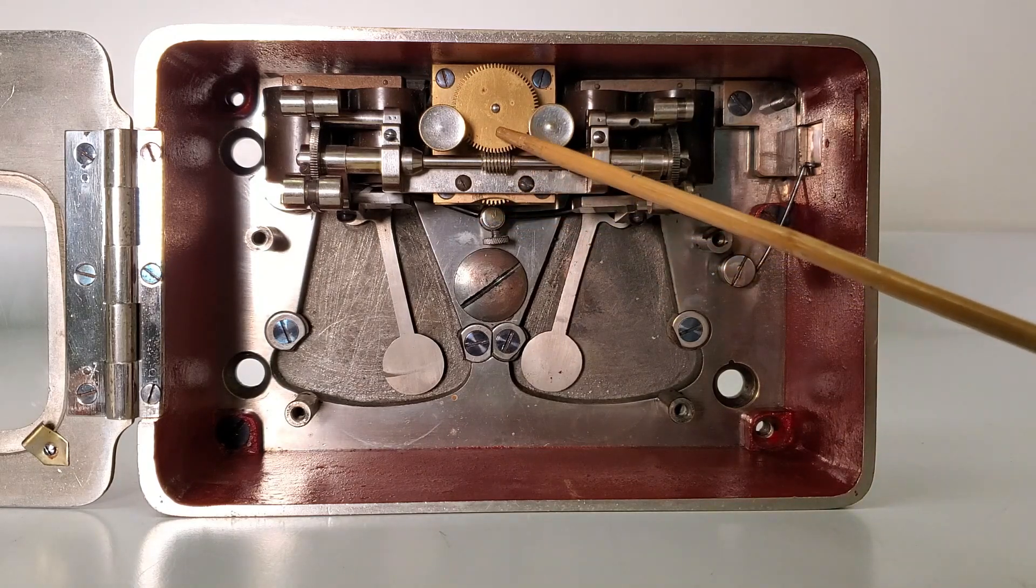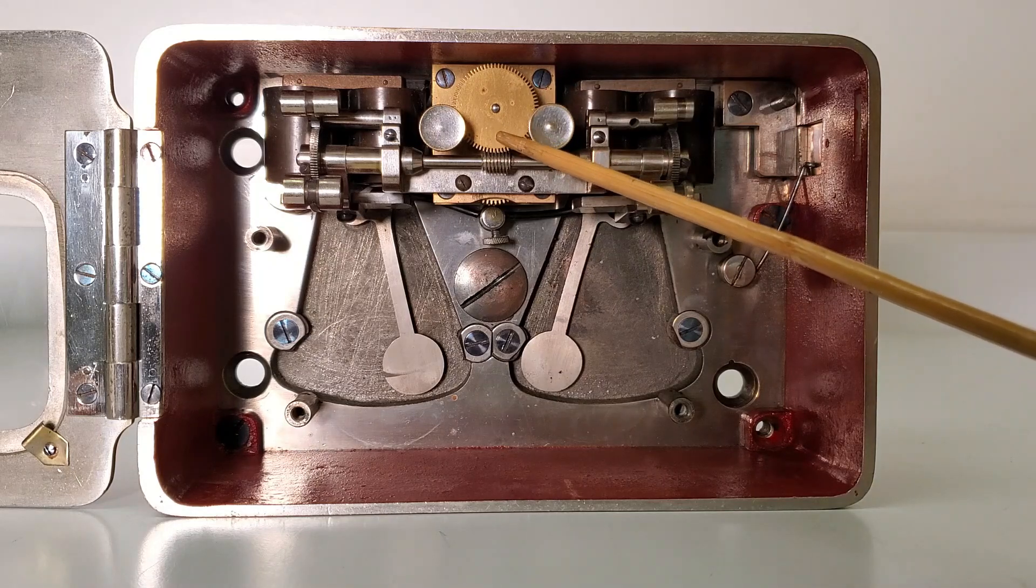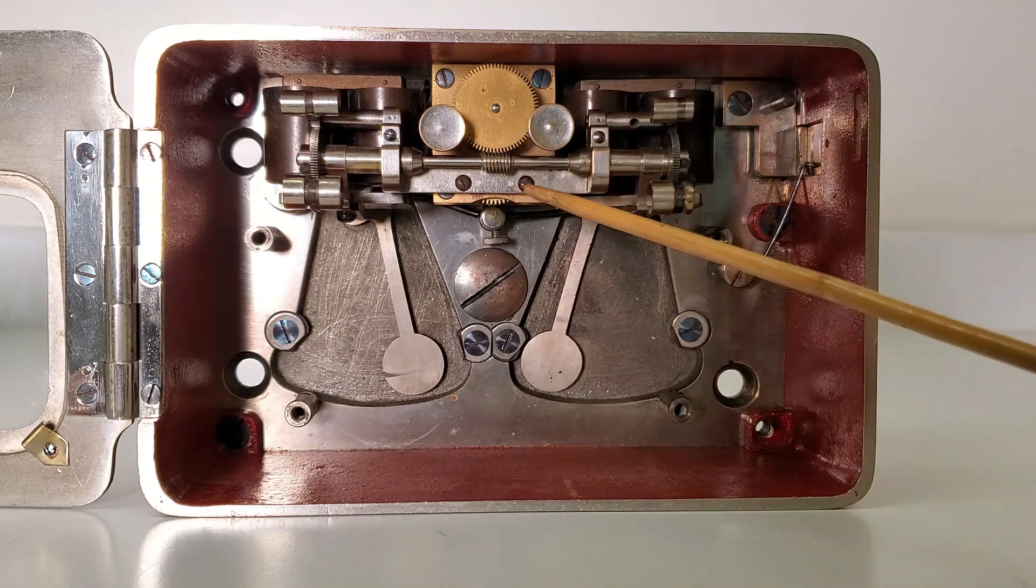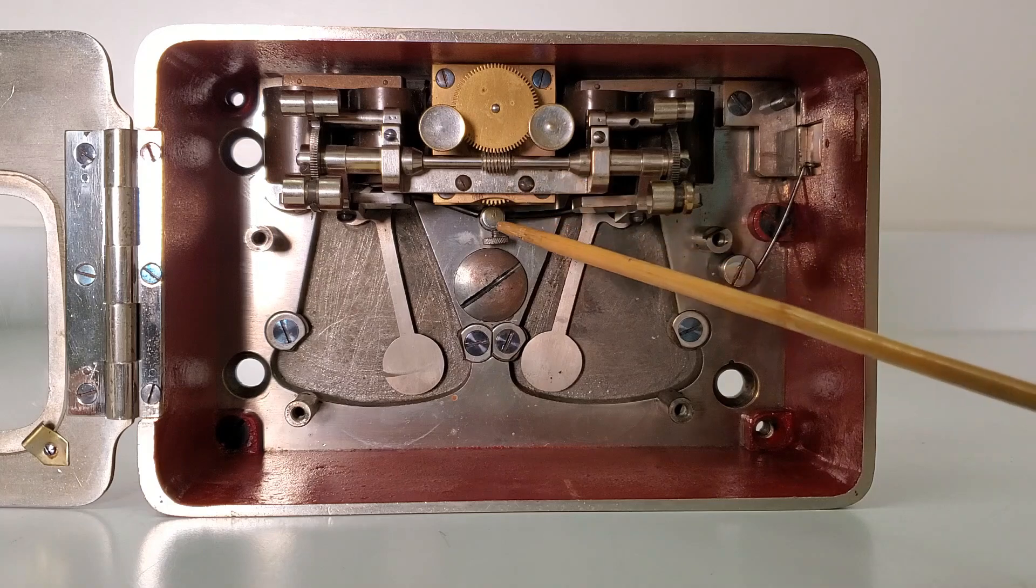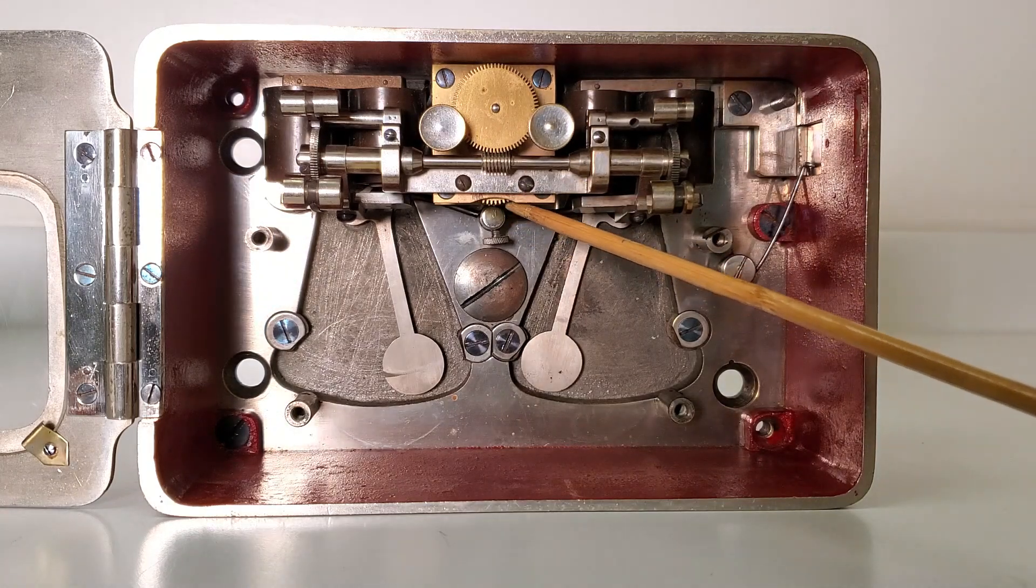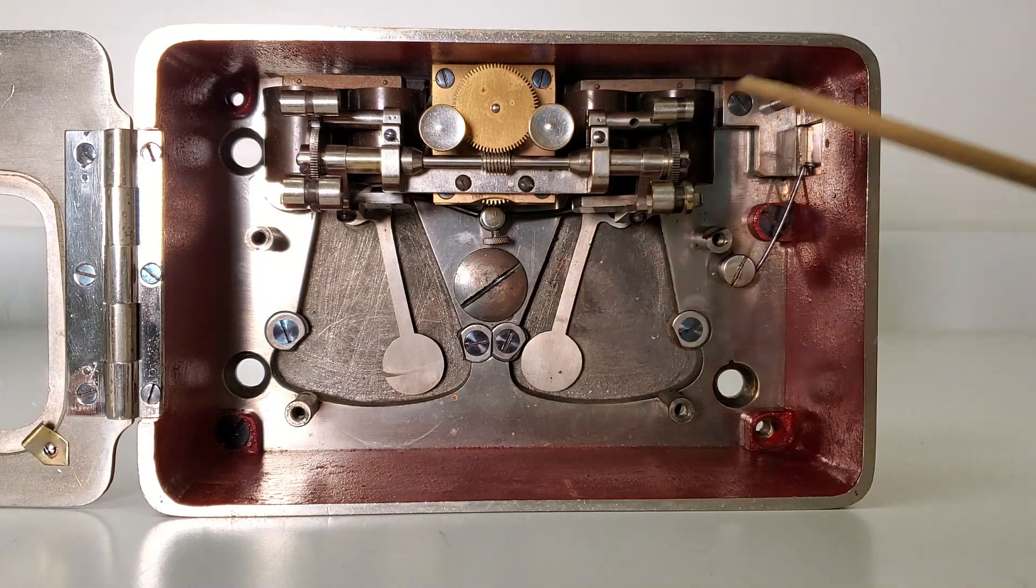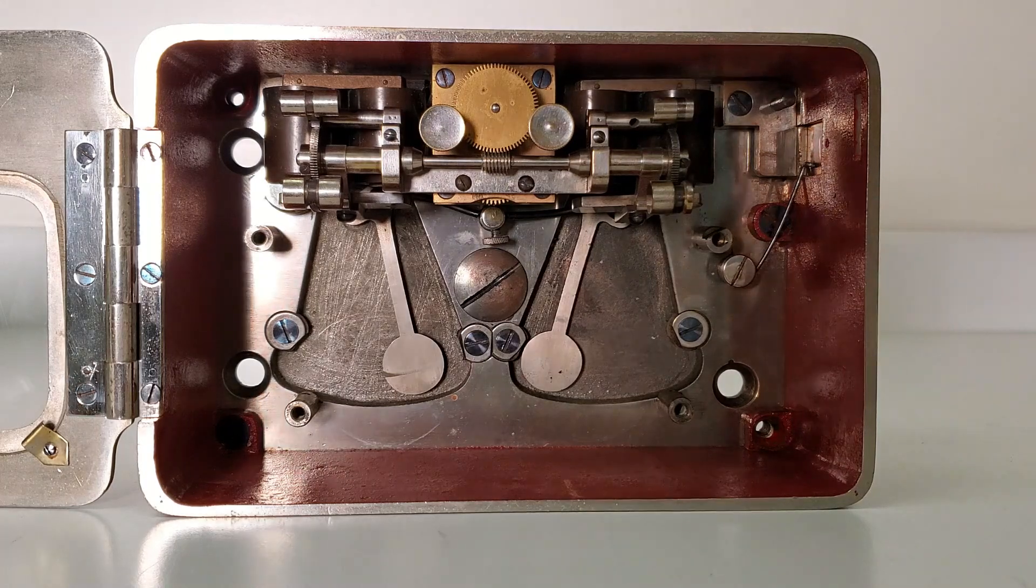Then the worm is hooked to this wheel, and this wheel then has another reduction gearing until it finally reaches this bottom gear here, which is what engages with the TimeLock movement.